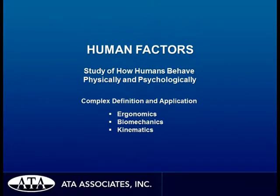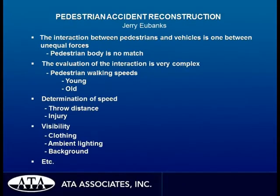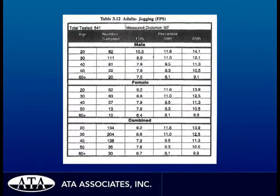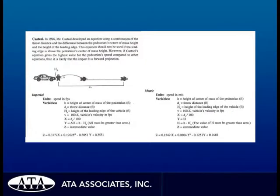Let's look at human factors, how humans behave. In a collision between pedestrians and vehicles, the pedestrian body is no match. Pedestrians walk at different speeds depending on the person's age and sex. The speed at which a pedestrian is struck will determine throw distance and extent of injuries.